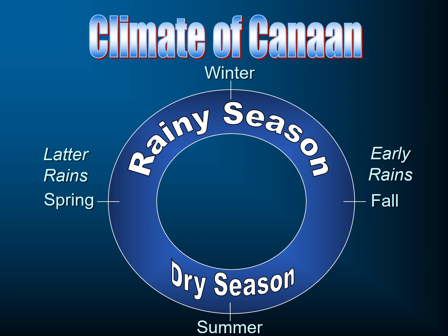The climate of Canaan is such that you have a rainy season and a dry season. Right around October or so, it begins to rain once in a while. We refer to those as the early rains, and a little bit more in November and December. By January, you're right at the peak of the rainy season. It begins to dwindle a little bit by February and March. In April, you have the very last of the rains, and now begins the dry season, from May all the way to the next October. It doesn't rain almost at all — maybe a few sprinkles on the coast, but throughout most of the land, it is completely dry.